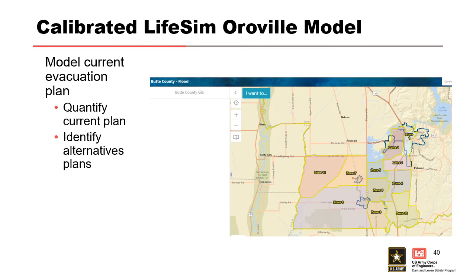You can use that calibrated model to inform alternatives analysis. For example, by evacuating people by zone out of Oroville — will it actually make a big difference in evacuation time? Considering the very few egress routes out of the area, it may not. That's something you can look at directly in the software. That was my overview of LifeSIM.